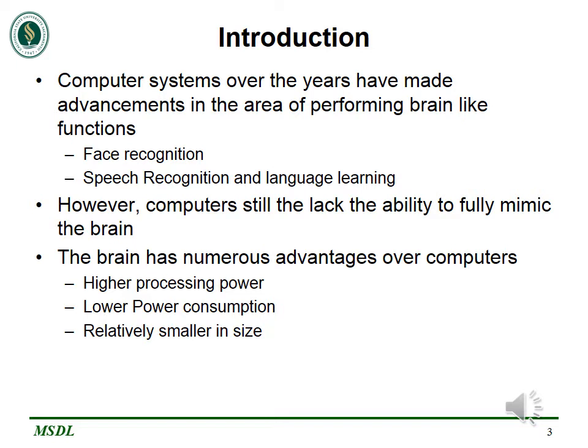The brain has numerous advantages over computers. We shall be discussing three of those advantages. The first advantage is that the brain has higher processing power. The brain has the ability to multitask — it can measure our blood pressure, measure our heartbeats, and at the same time we get to think and decide. Scientists found that it took 82,944 supercomputers to perform the functions that the brain performs in just one second, demonstrating that the brain truly has higher processing power.